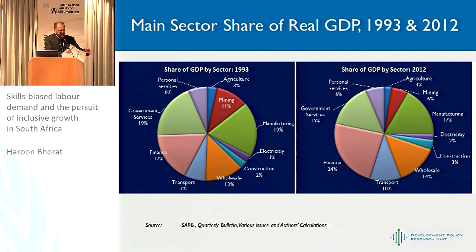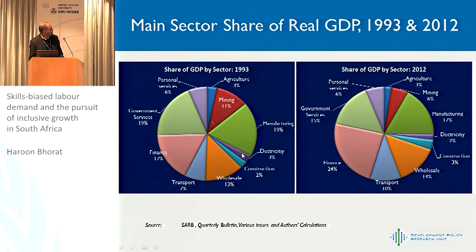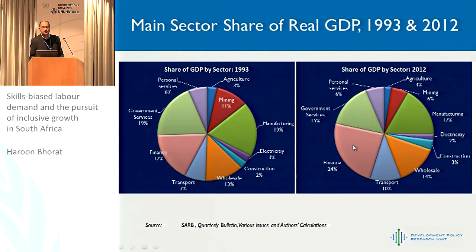Just to give a sense of structural changes over a short period — 1993 to 2012 using simple shares of real GDP over the post-apartheid period. The big story here is financial and business services growing from 17% to 24% of GDP, partly explained by the mining share declining from 11% to 6%. Agriculture is important for another reason, but it's not a GDP story — you see constant shares of GDP for agriculture over the period.